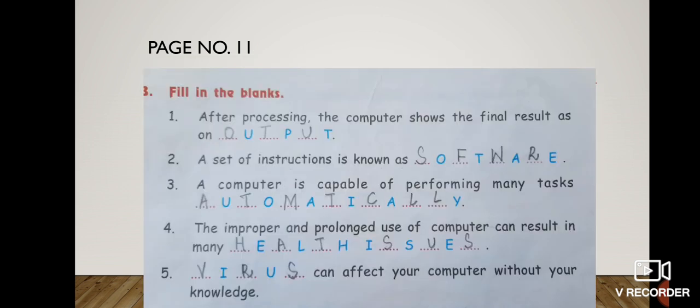After that, B on page number 11, filling the blanks. After processing the computer shows the final result as on dash. There is written 'on', you have to write 'an'. It is A-N, an. Output. So some of the alphabets which are missing you have to fill those alphabets. O, T, U.